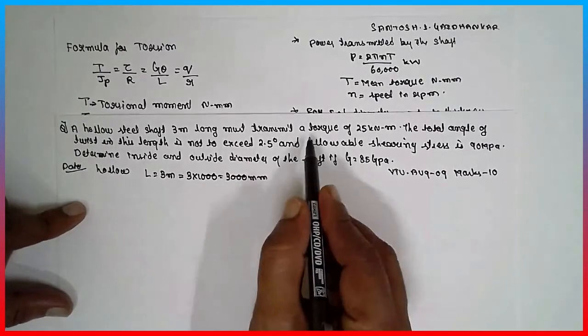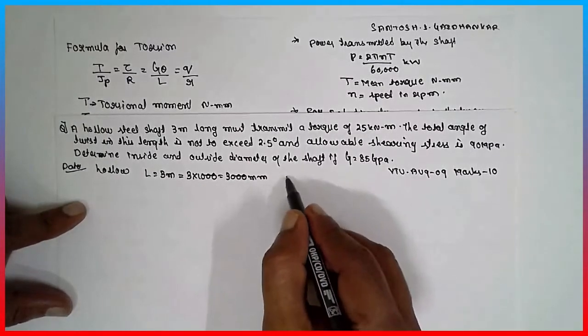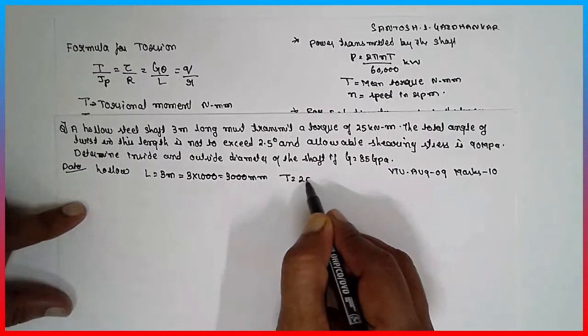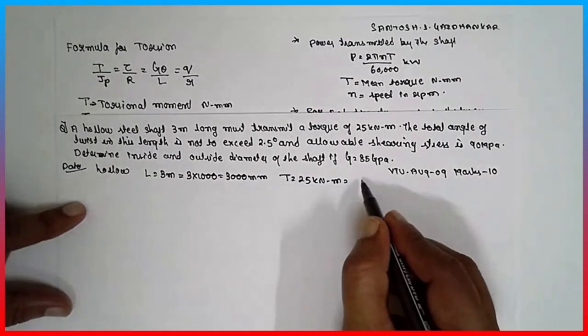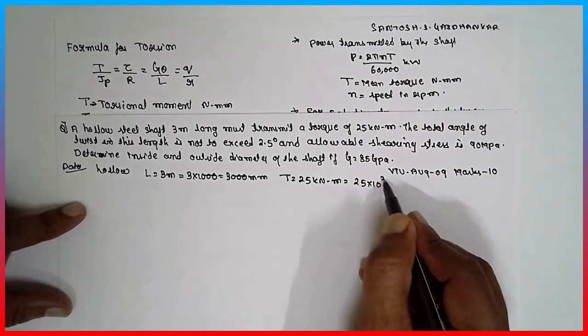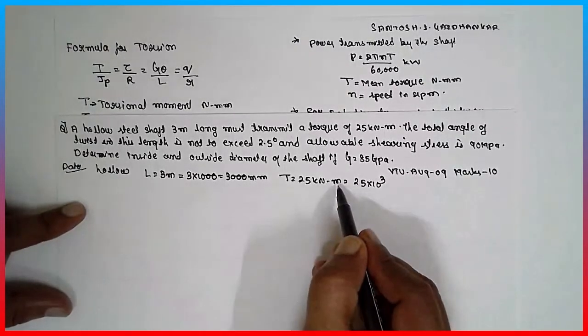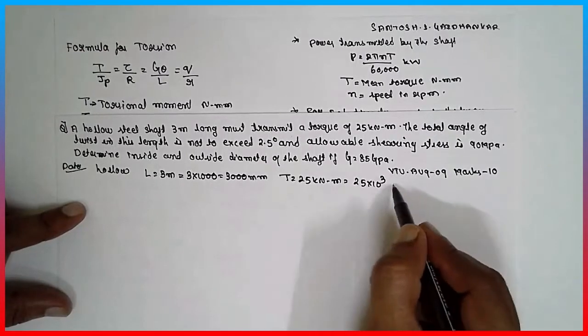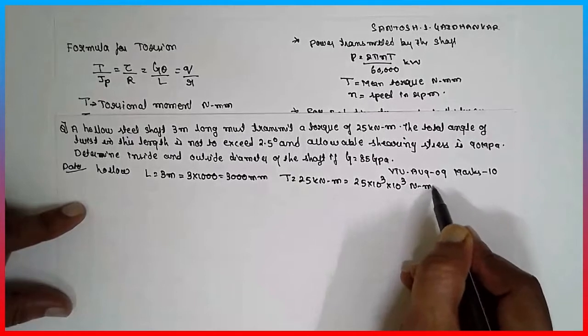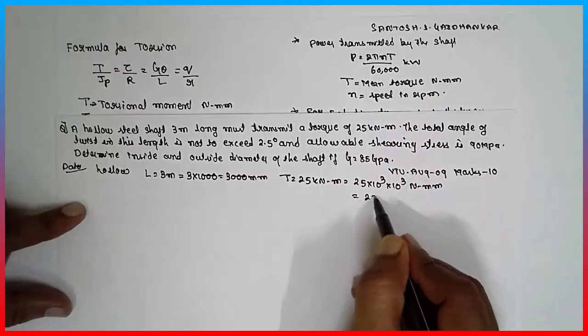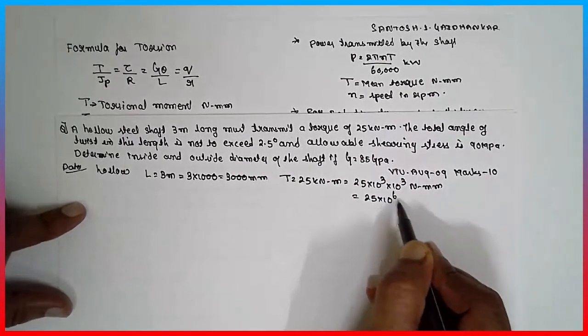Must transmit a torque of 25 kilo Newton meter. Has to be expressed in terms of Newton mm, 25 into 10 raise to 3. Now this meter has to be converted in terms of mm, therefore again multiply by 1000, becomes Newton mm. That means 25 into 10 raise to 6 Newton mm.